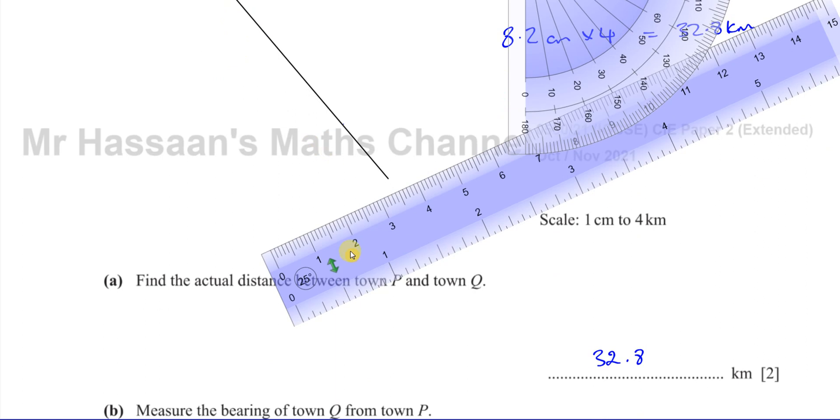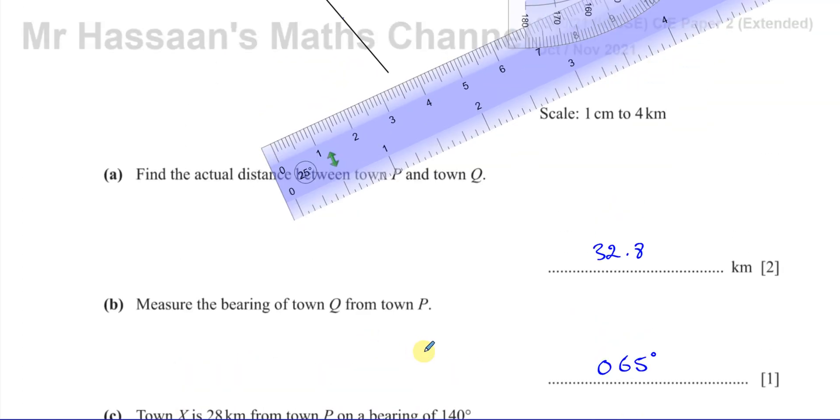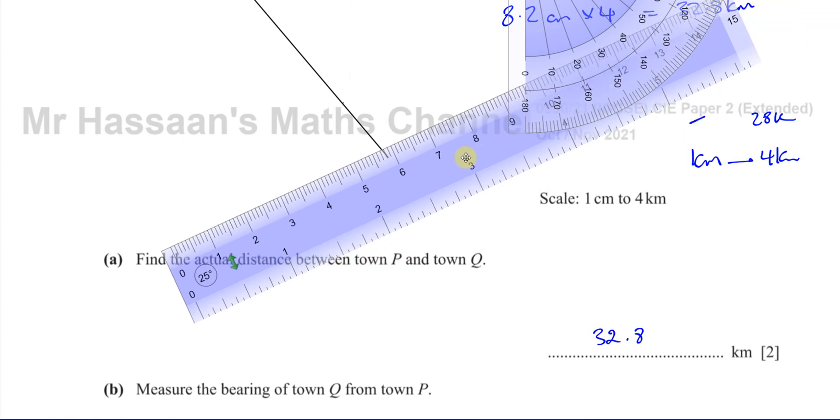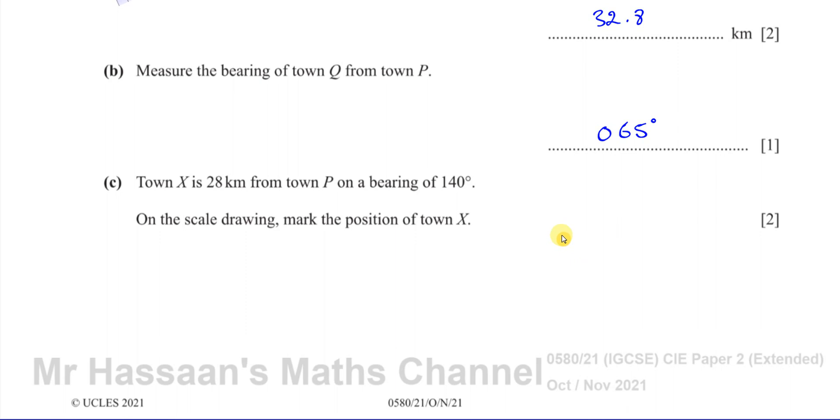Now we want to measure 28 kilometers. So if one centimeter is four kilometers, then 28 kilometers is X centimeters. Let's move this out of the way a bit. I'll put it down here. So we know that one centimeter is four kilometers. So we want to know how many centimeters does 28 kilometers represent. So of course, it's going to be seven. X is going to be seven centimeters. 28 divided by four, which will give you seven.